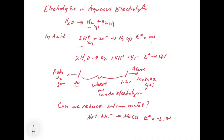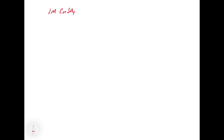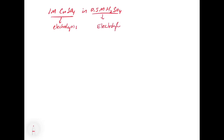Let's look at an example: the electroplating of copper sulfate in an acidic solution. We take 1 M copper sulfate — using 1 M so we have standard conditions and can use standard cell potentials — and put it into 0.5 M H₂SO₄. The copper sulfate is our substrate, what we want to do electrolysis on, and the H₂SO₄ is our electrolyte to increase conductivity. Using acid also makes the copper more soluble and works a little better.